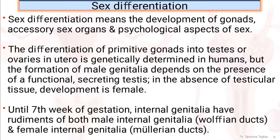Sex differentiation refers to the development of gonads, accessory sex organs, and the psychological aspects of sex. The differentiation of primitive gonads into testis or ovaries in utero is genetically determined in humans. However, the formation of male genitalia depends on the presence of functional secretory testis, and in the absence of testicular tissue, female development occurs.